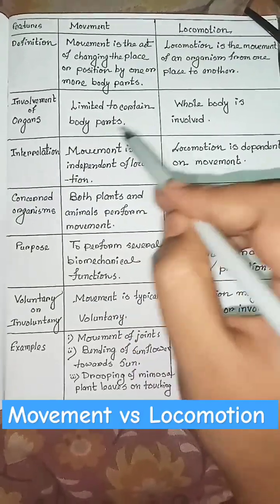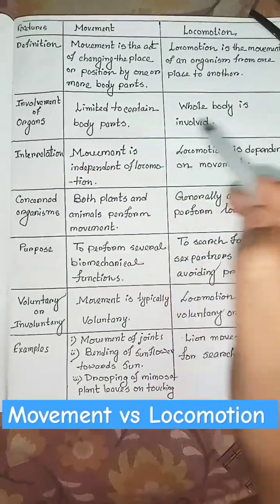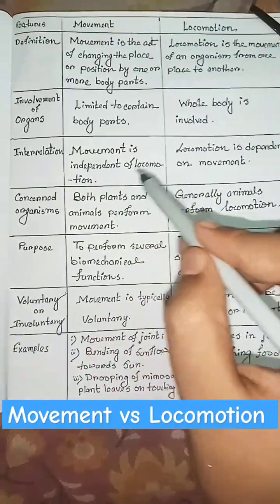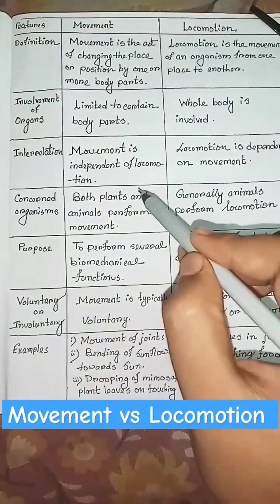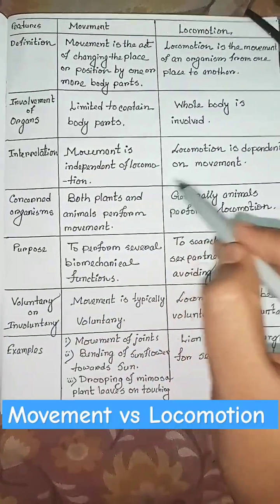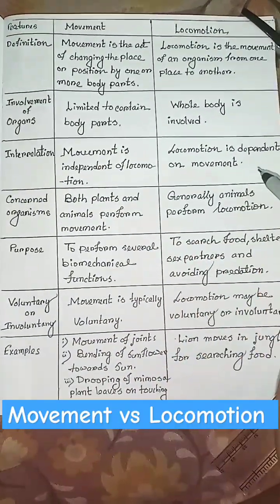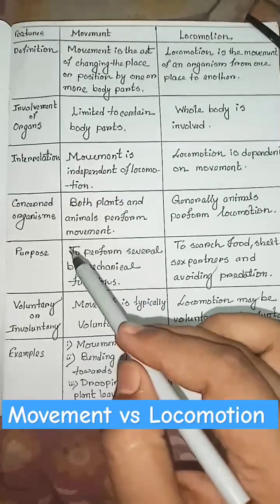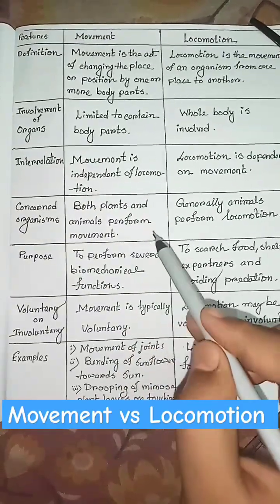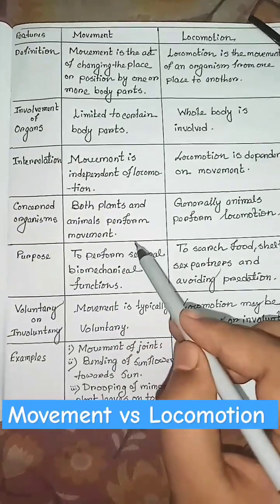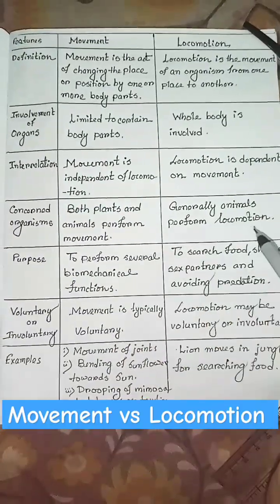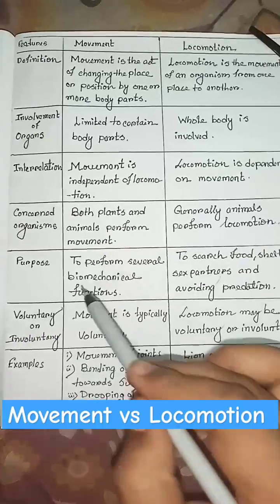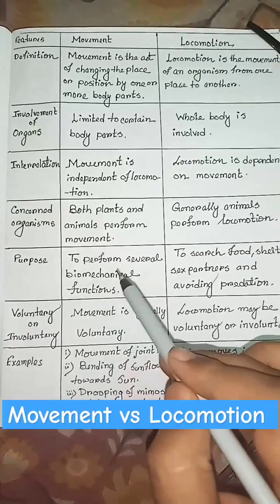Interrelation: movement is independent of locomotion, but locomotion is dependent on movement. Concerned organism: both plants and animals perform movement, but generally only animals perform locomotion.